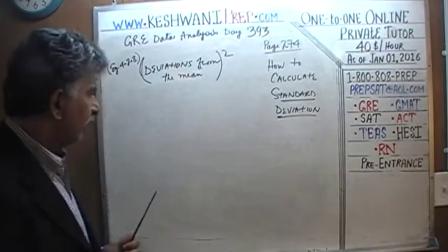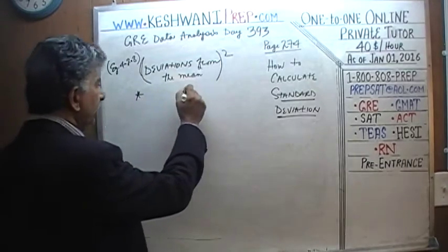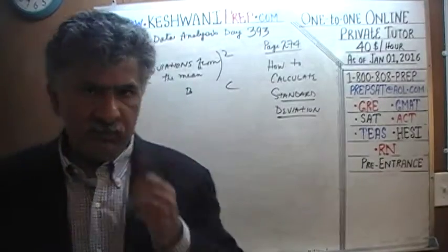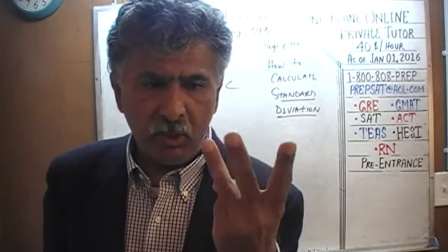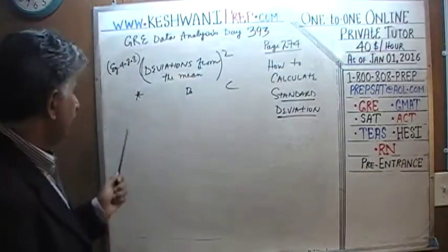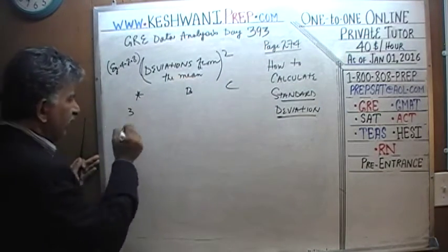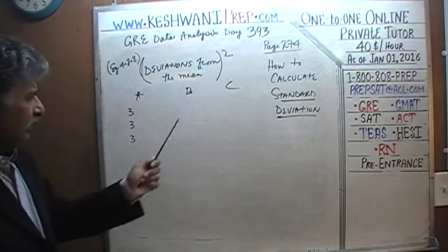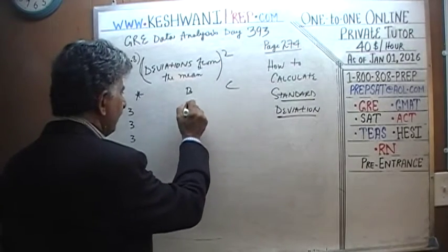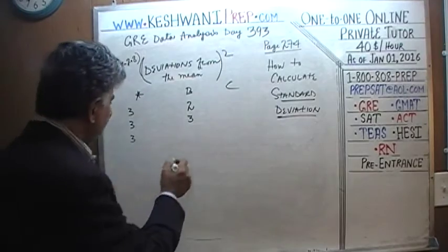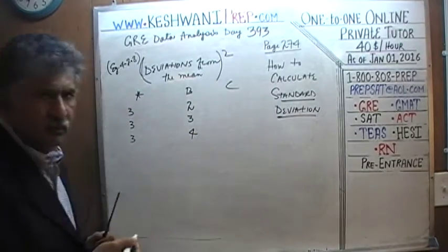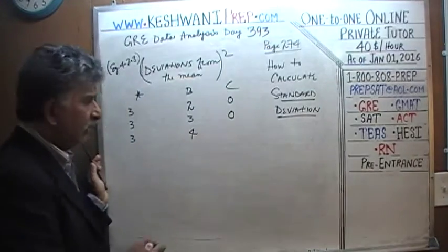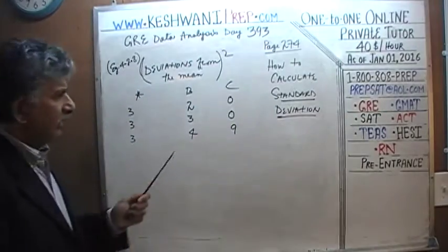Let's look at three different scenarios — three towns. In Town A, all three people have an income of $3. In Town B, the first person has $2, the second $3, the third $4. In Town C, the first person has $0, the second $0, and the third has $9.